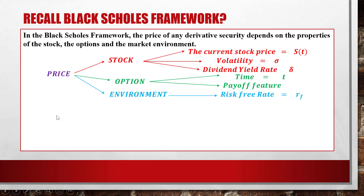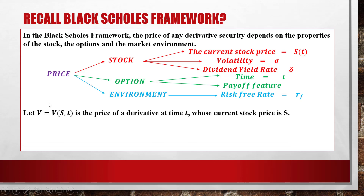For the price, we use V to denote the price of a derivative at time t. V depends on two variables S and t, so we write V as a function of S and t. Here S is the current stock price and t is the time where we consider the price of the derivative. As time proceeds, t increases and S will change, so V is a function of both S and t.